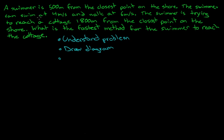In this question, a swimmer is 500 meters from the closest point on the shore, and they can swim at 4 meters a second and walk at 6 meters a second. They're trying to reach a cottage 1800 meters from the closest point on the shore. It's obviously going to be a mixture of walking and swimming, and we have to figure out the fastest method — the distance to walk. We have to make our definitions of variables.